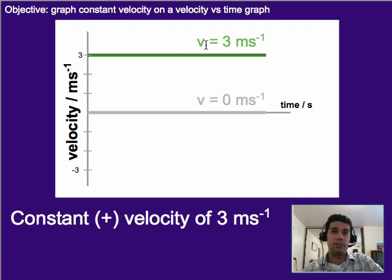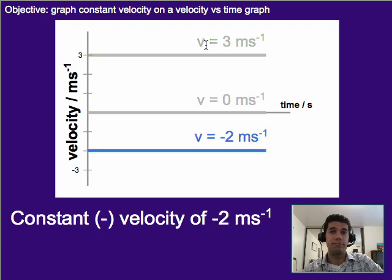If we wanted a negative velocity, you would show that by doing a flat line like this, but down in the negative part of the graph. So in this case, this shows a constant velocity of negative two meters per second, since the velocity value, or the y value, does not change. If the y value were to change and increase or decrease, then it wouldn't be a constant velocity. The velocity would be changing.